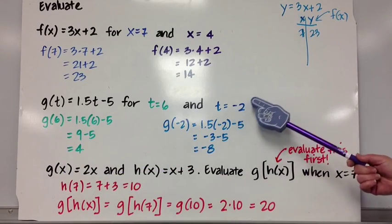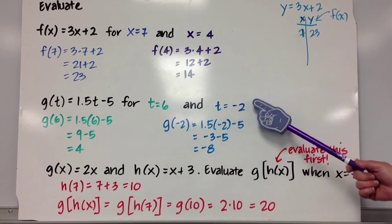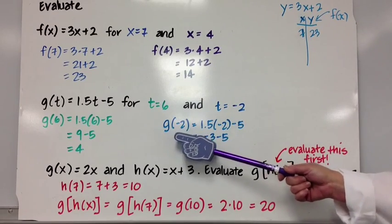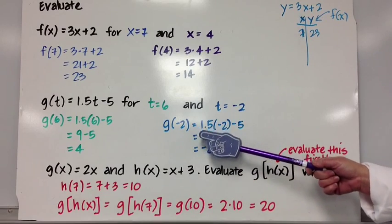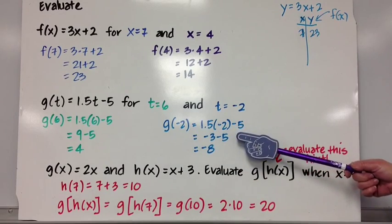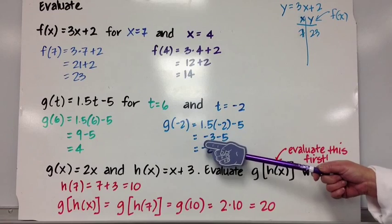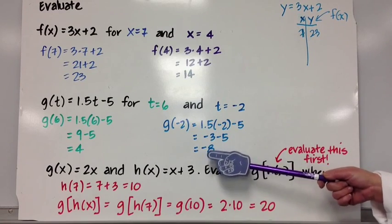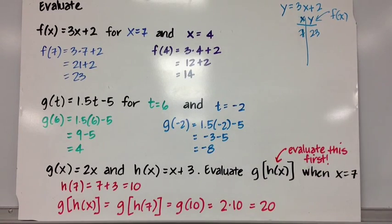When t = -2, g(-2) = 1.5 times -2 minus 5 = -3 - 5 = -8. Hopefully you're settling down and realizing this is just another way to write something we've already done before. Now I'm going to blow your socks off.